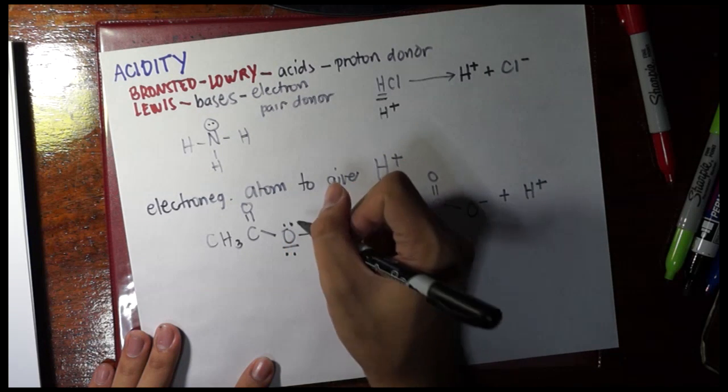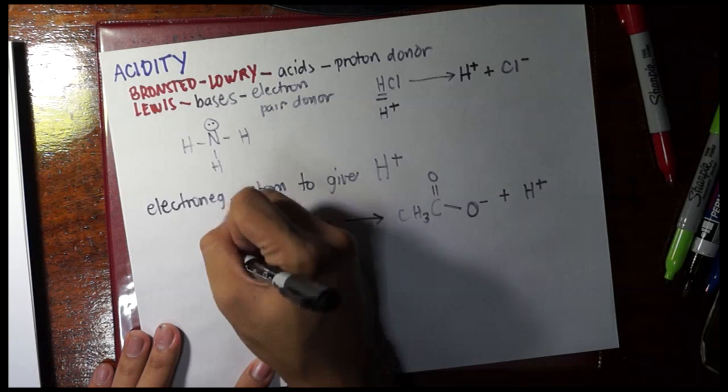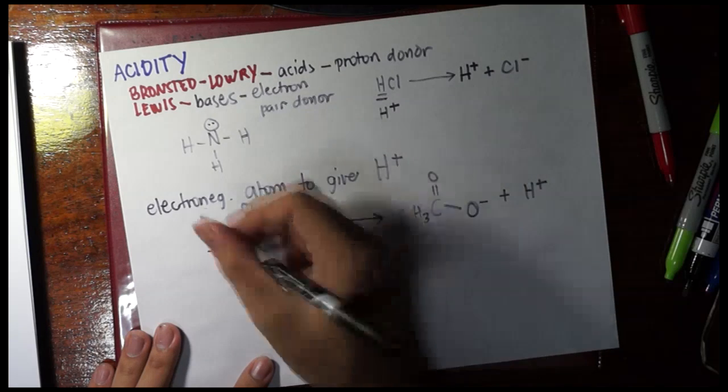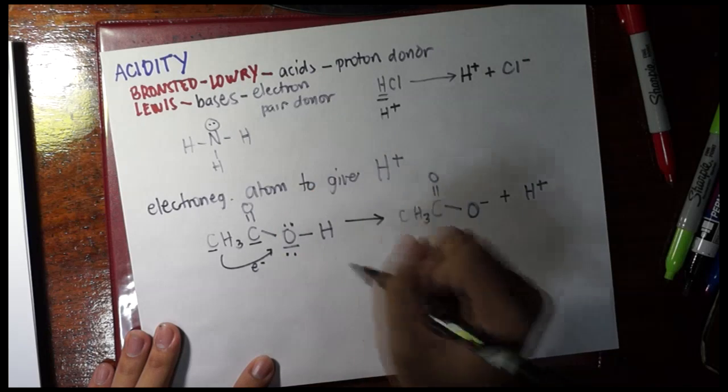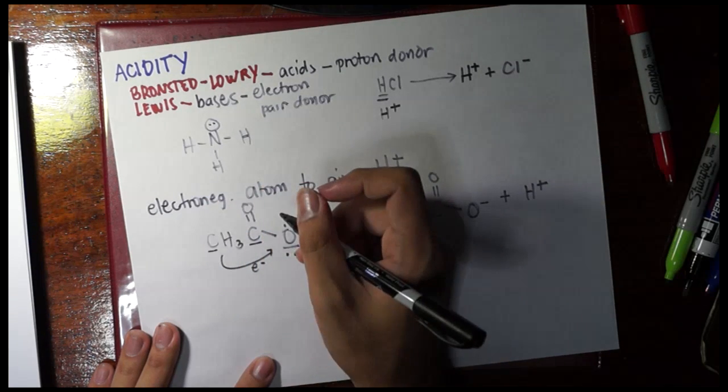So there should be electron donating or electron repelling inductive effects. Remember, carbon compared to oxygen is less electronegative. It could repel electrons towards it, and then this oxygen would be satisfied. In acetic acid, we have two carbons. That's okay.